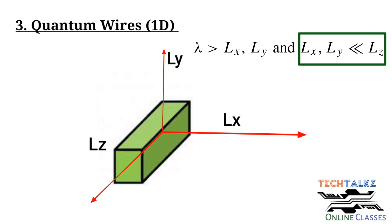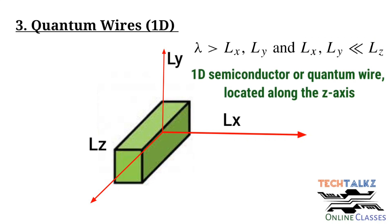We can say the electron movement is restricted across x and y plane. And at the same time, it is free to move across z plane or one dimension. And this corresponds to a one dimensional semiconductor or quantum wire.